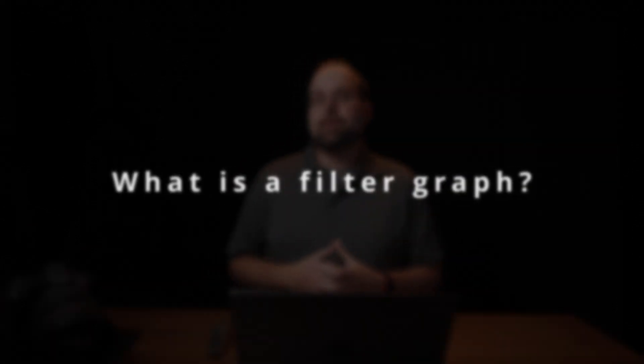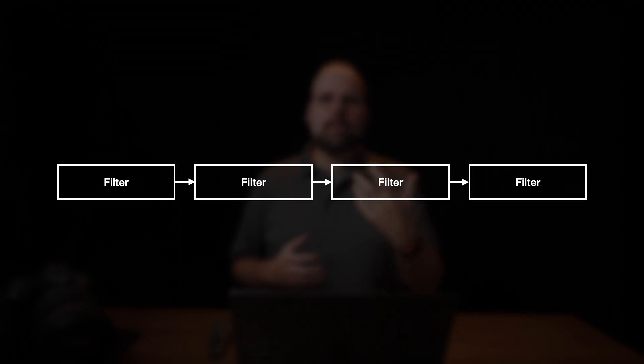So what is a filter graph? Put simply, filter graphs are FFmpeg's way of describing complex filtering actions. They're composed of what FFmpeg calls filter chains, which are just a series of individual filters separated by commas. Those individual filters are things like the ARNNDN noise filter from the previous video, or the ASplit filter that we will be talking about in this video. Filters are put together with commas to create filter chains, and then one or more filter chains are put together with semicolons to create a filter graph.